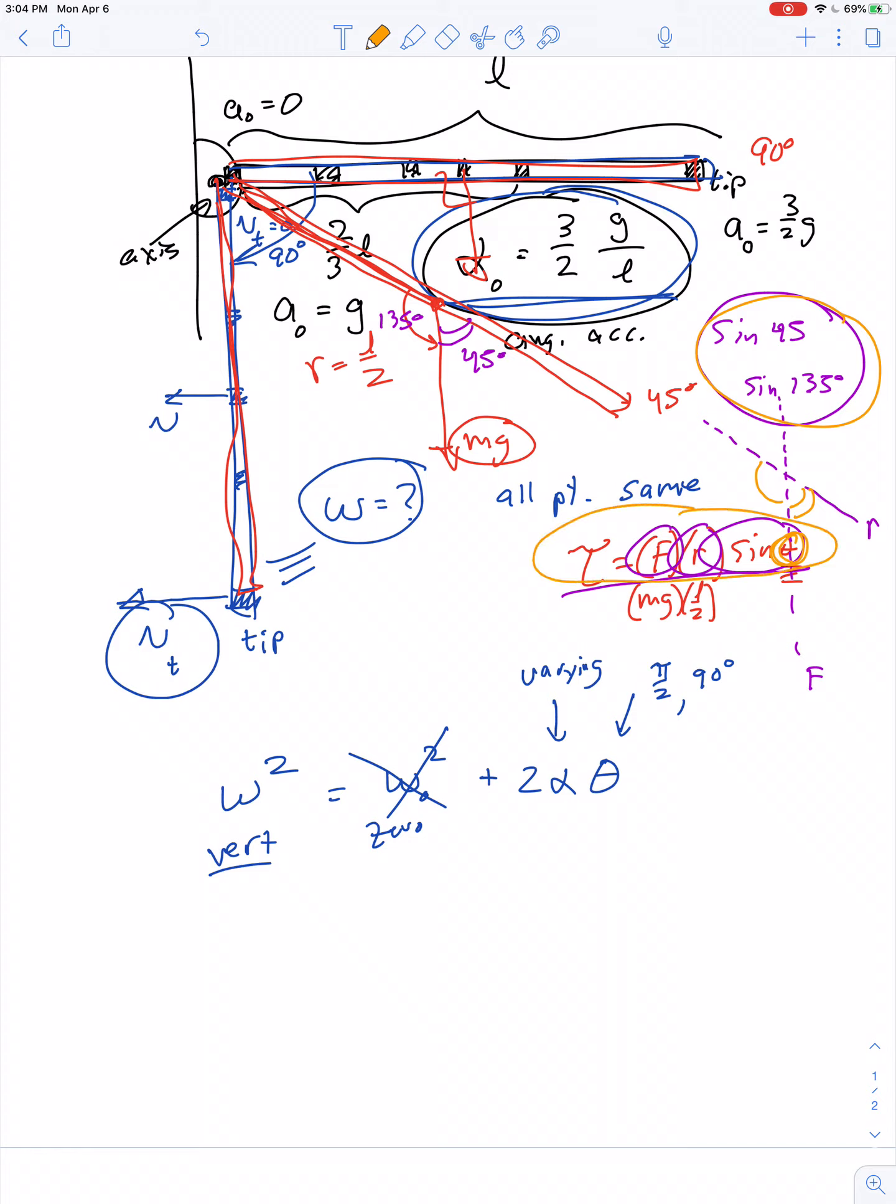So anyway, my point being, because the angle theta varies, the torque varies. And if torque varies, alpha varies. And if alpha varies, you can't use a kinematics equation.